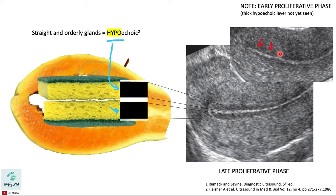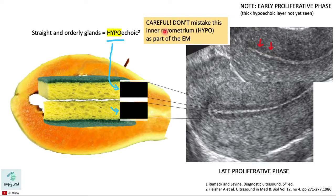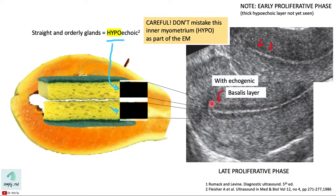What is this hypoechoic layer? This hypoechoic layer is actually part of the inner myometrium. We have to be careful not to include this when we take the endometrial thickness. To differentiate this inner myometrium from the hypoechoic functional layer, we look at the basalis layer. In the true trilaminar appearance, we see the echogenic basalis layer lining the thick hypoechoic functional layer. This basalis layer is not seen at the inner myometrium portion.